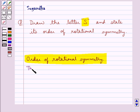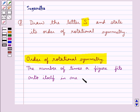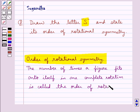The number of times a figure fits onto itself in one complete rotation is called the order of rotational symmetry.